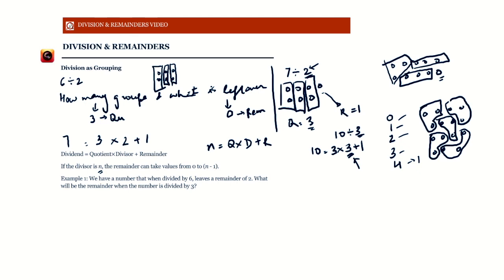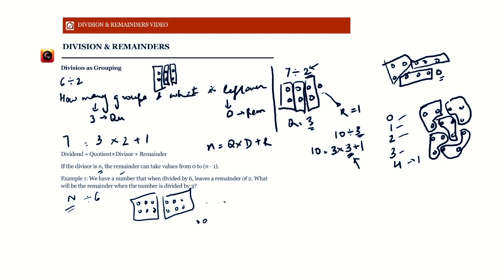Here's an example: a number, call it n, when divided by 6 leaves a remainder of 2. So when we divide n marbles into groups of 6 each, there are some groups of 6 — we don't know how many — but at the end, 2 marbles are left over.